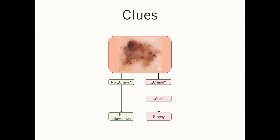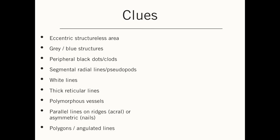Now you already know the first step of the chaos and clues algorithm. If you see a chaotic lesion, you have to look for certain clues. There are several clues to malignancy, and this is a little bit more difficult because you have to remember them. There is no easy way around it, but the good thing is it is an investment in your future, because these clues can also be used in the more powerful pattern analysis.